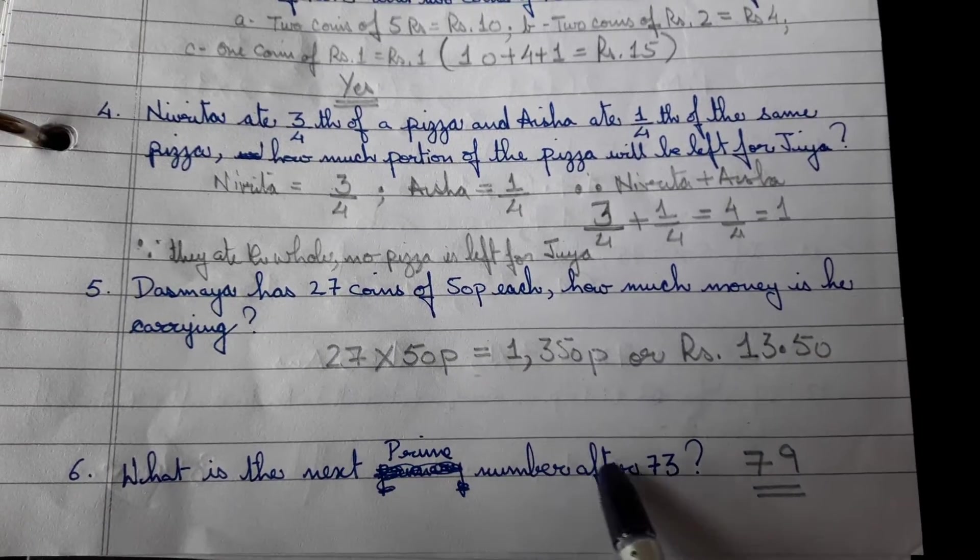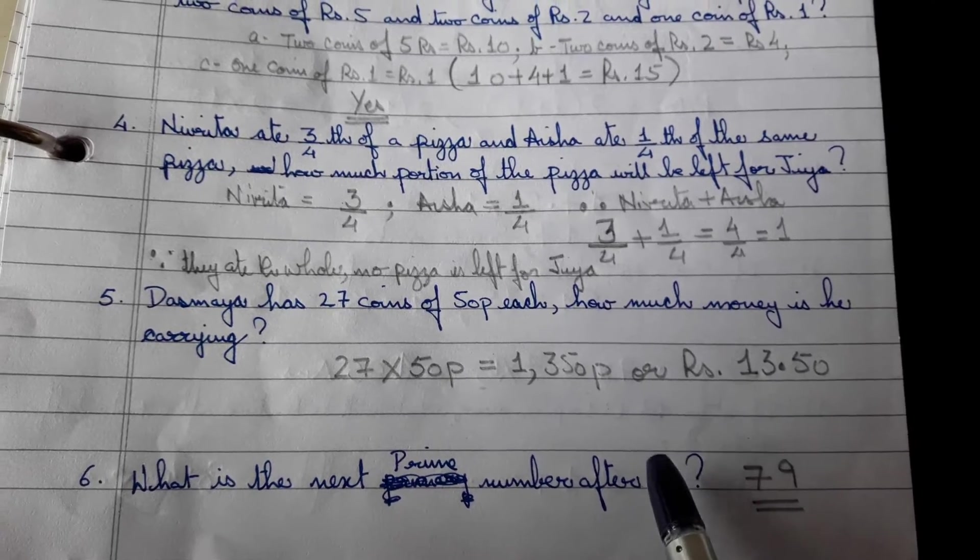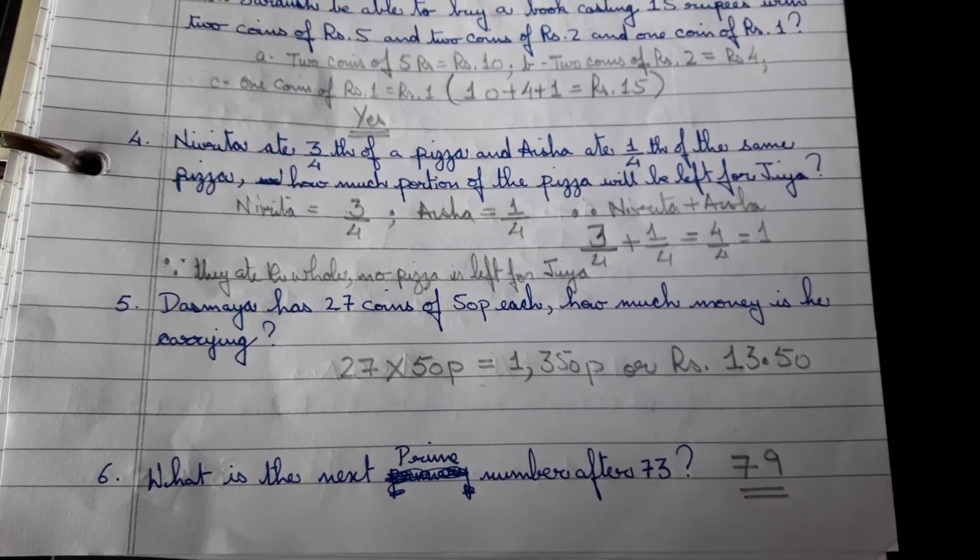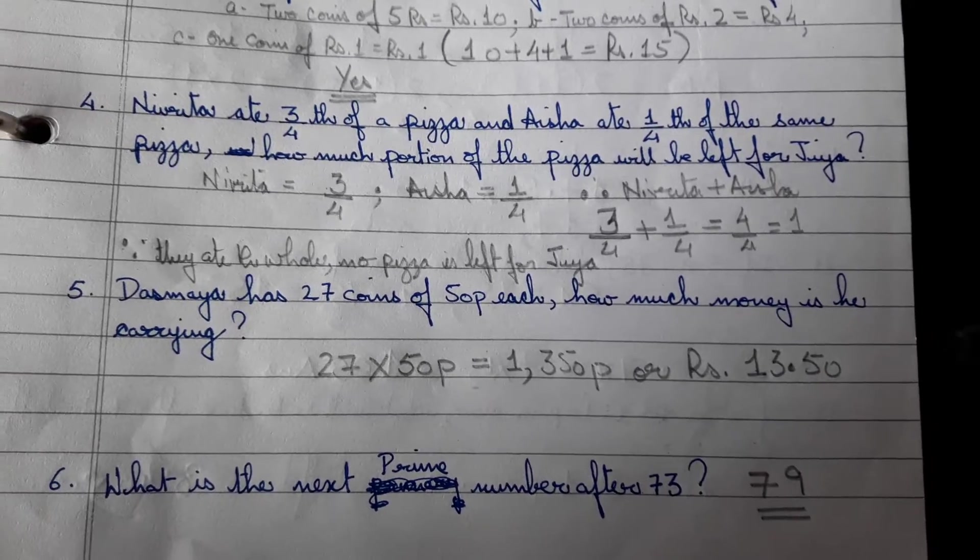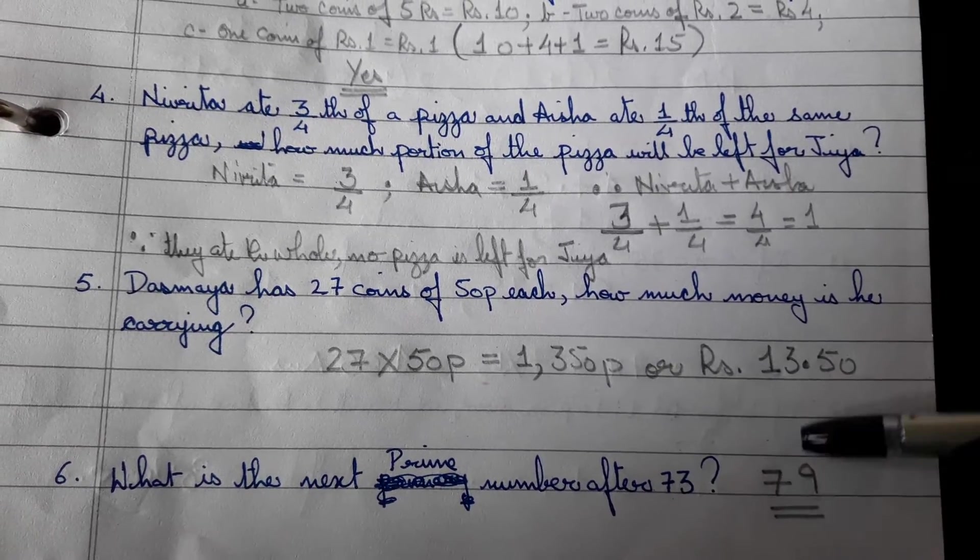What is the next prime number after 73? All of us know what prime numbers are. They have only two factors: one is 1 and the other factor is the number itself. So after 73, the next prime number is 79.